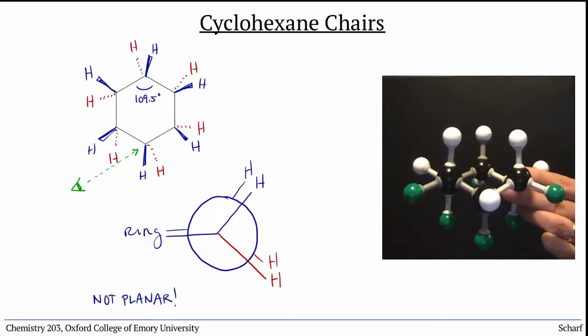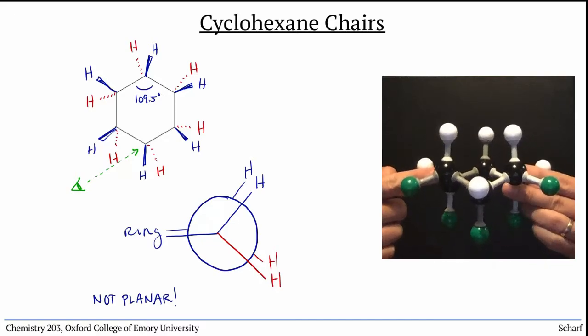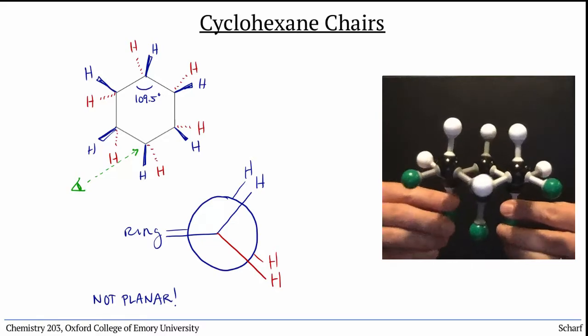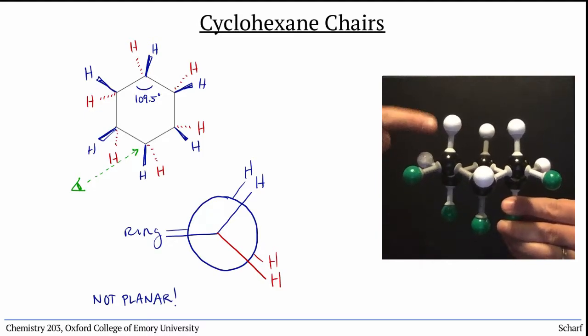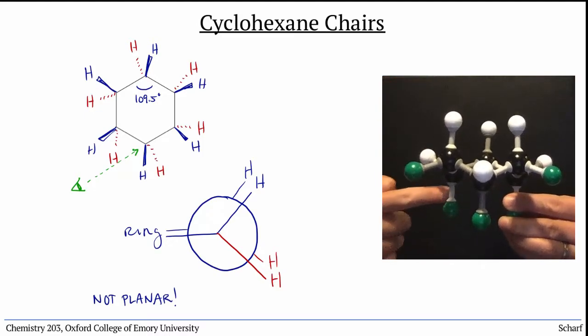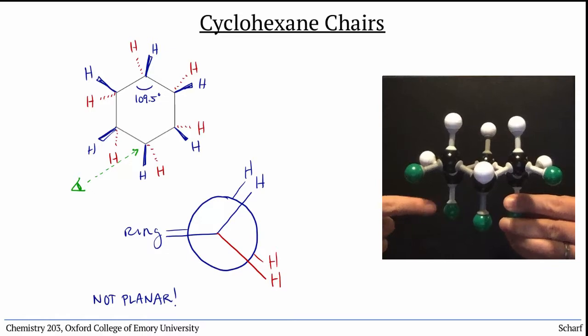If you look at this chair conformation from the side, you can see that there are two distinct types of hydrogen atoms: those pointed vertically, either straight up or straight down, and those pointing angling out to the sides, just slightly upward or downward.